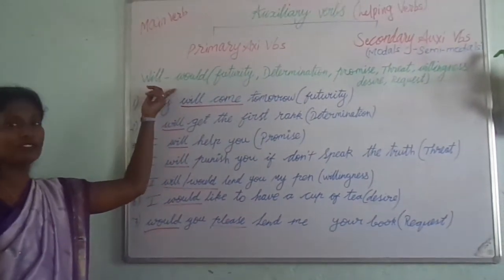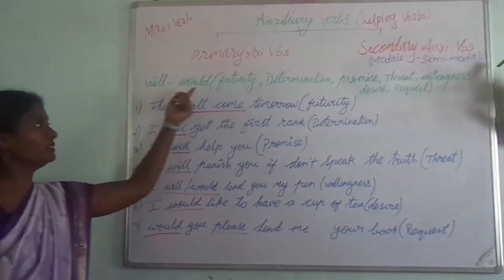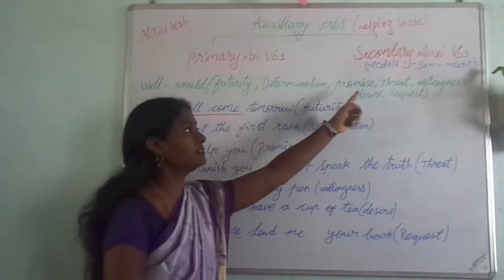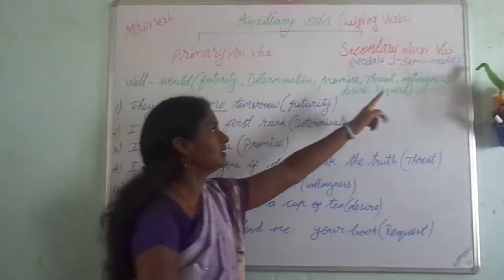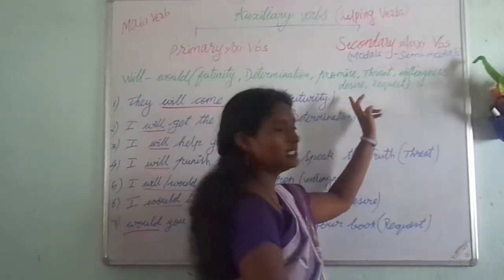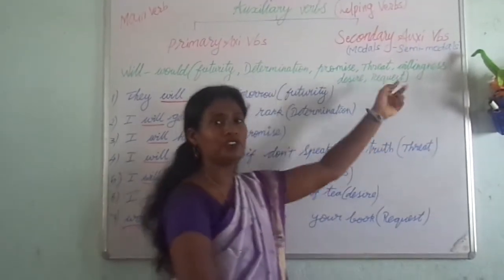The purposes of will and would are: futurity, determination, promise, threat, willingness, desire, and request.